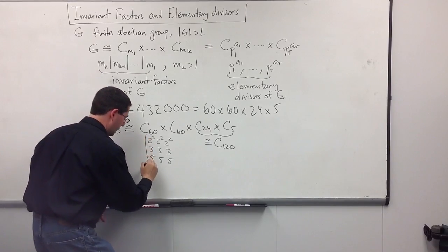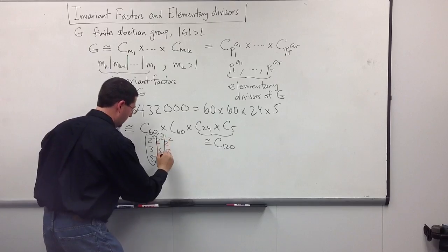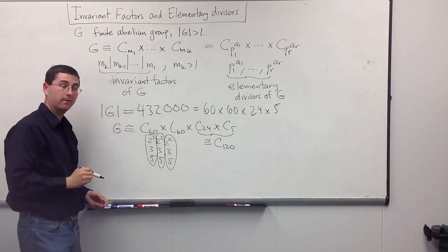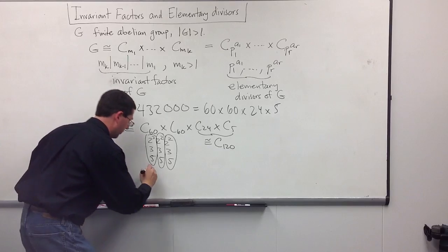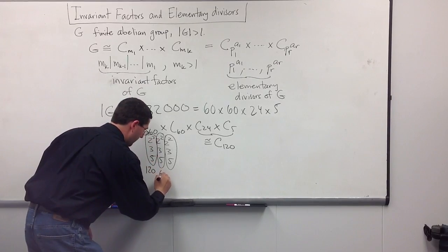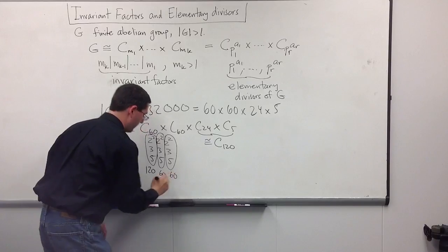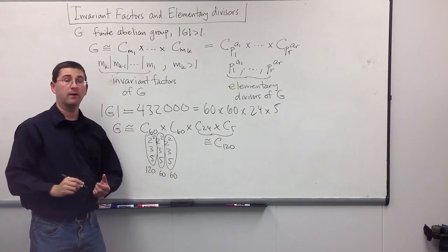And, now, if I circle these things vertically, I will get my invariant factors. 2 cubed times 3 times 5 is going to be 120. 2 squared times 3 times 5 is 60. And, there's another copy of our 60. So, immediately, I'm able to get all the invariant factors out.